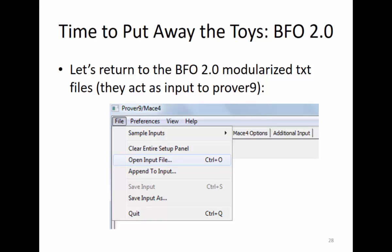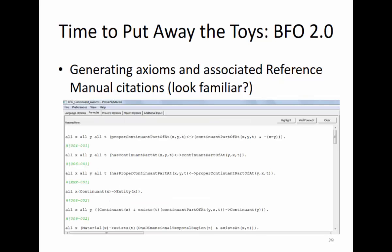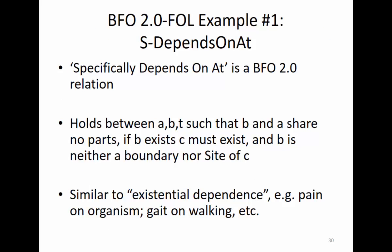Now it's time to put away the toys and use actual examples from BFO. Here's the GUI - open the input files, you generate axioms just by opening the input files. These should look pretty familiar - these are some of the things you would see in a BFO specification, now in Prover9 notation. I also have the citation number commented out so you can see where to look. Remember the continuant example - I'm an entity? This is the continuant file: everything that mentions continuant is going to be in there.